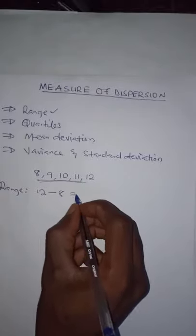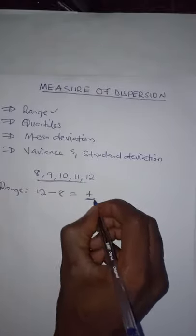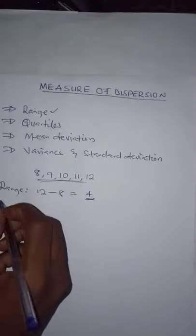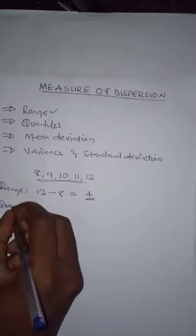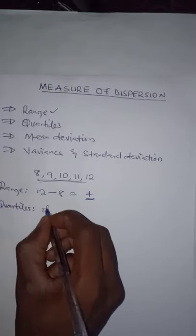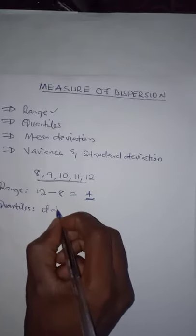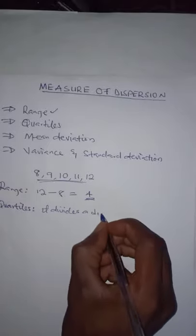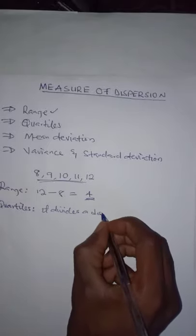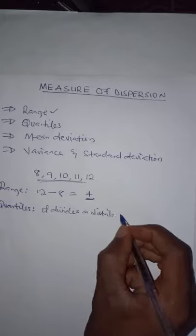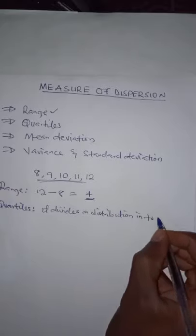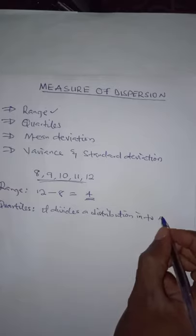That is equal to 4, so the range of this data is 4. What quartiles does is it divides a distribution into four parts.